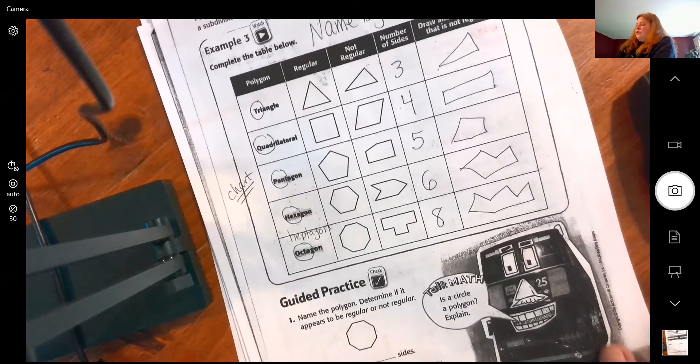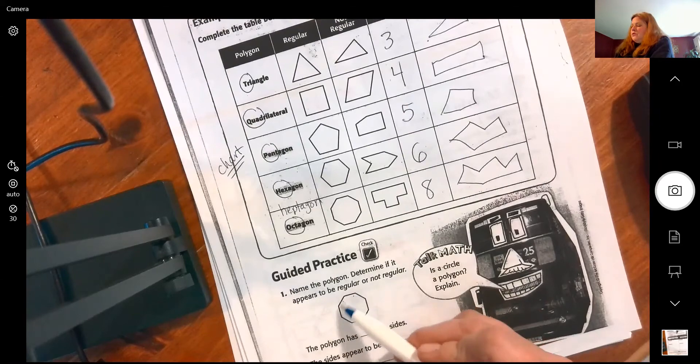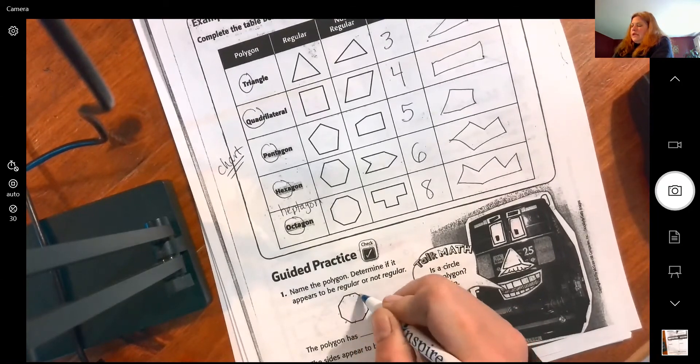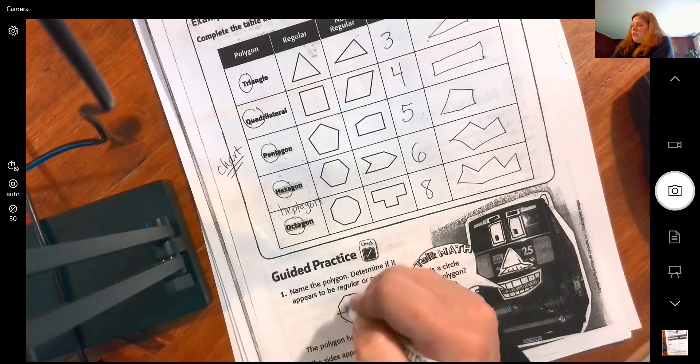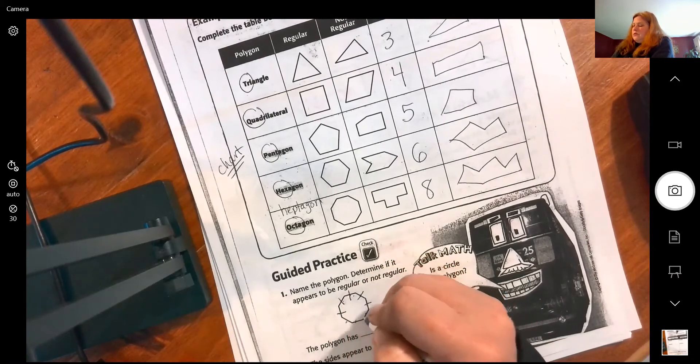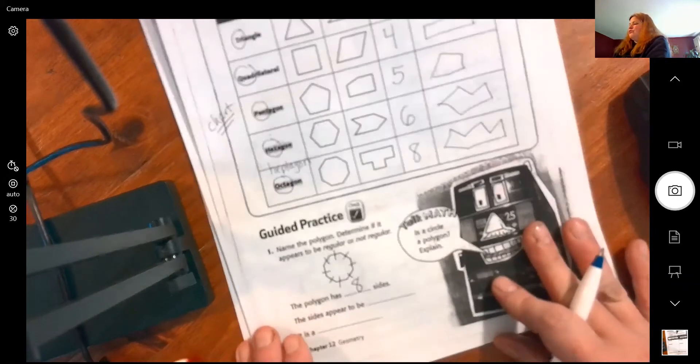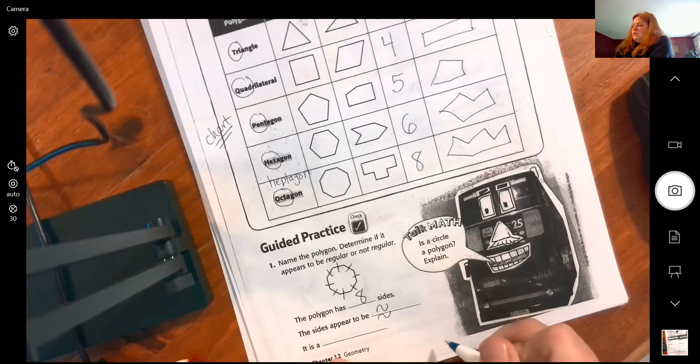So first off, how many sides do I have? One, two, three, four, five, six, seven, eight. Eight sides. They appear to all be congruent. Now this one you don't need to measure it, you can eyeball it. They're going to make sure you can really tell if it's not congruent. They are congruent or equal, so it is a regular shape.